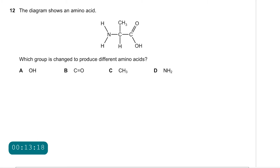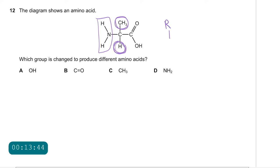Question 12: the diagram shows an amino acid — which group is changed to produce different amino acids? The group that always changes is the R group or side chain. Don't confuse it with the hydrogen, which always stays. In this case the R group is CH₃, the amine group is NH₂, and the carboxylic acid group is also present. The only correct choice here is C.